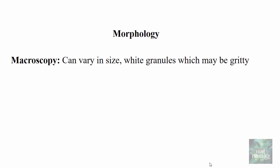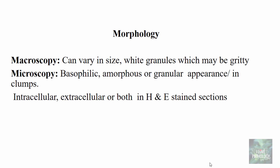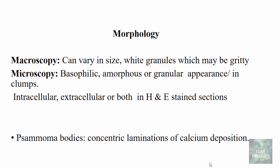The morphology of pathologic calcification is the same whether dystrophic or metastatic. Macroscopically, the calcified spots vary in size, resembling white granules that may be gritty in texture. Microscopically, they are basophilic — most importantly — and can appear amorphous, granular, or in clumps, seen intracellularly or extracellularly in H&E stained sections. A peculiar morphological appearance is psammoma bodies, which are concentric laminations of calcium deposition, seen in papillary carcinoma of the thyroid, papillary serous cystadenocarcinomas, meningiomas, somatostatinomas, and sometimes mesotheliomas.